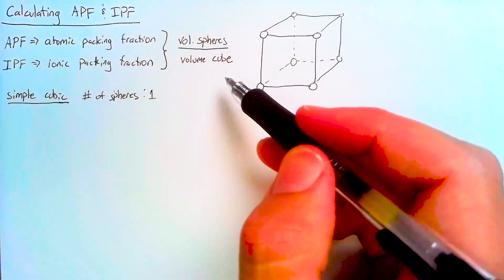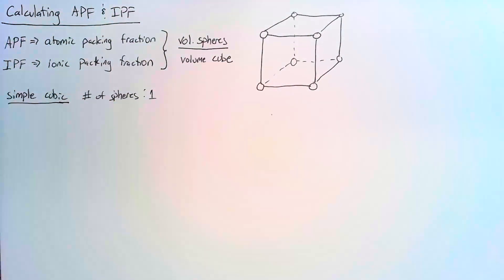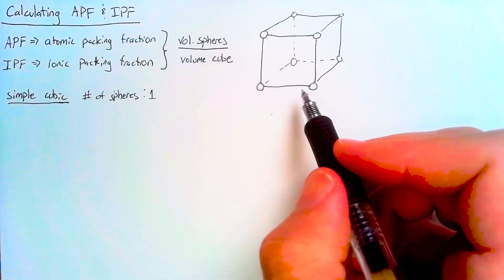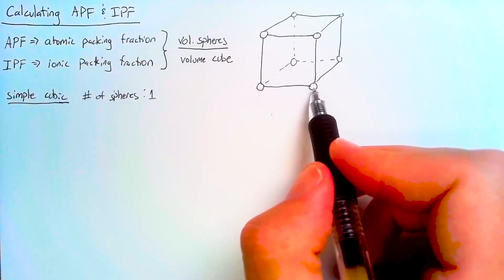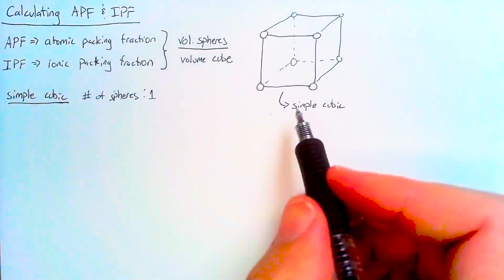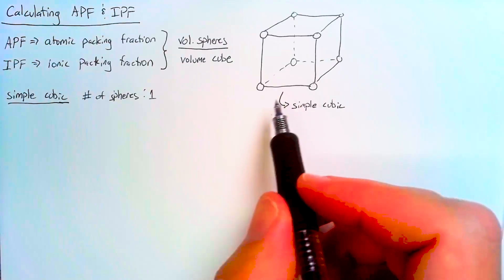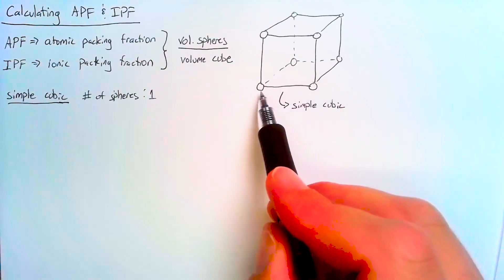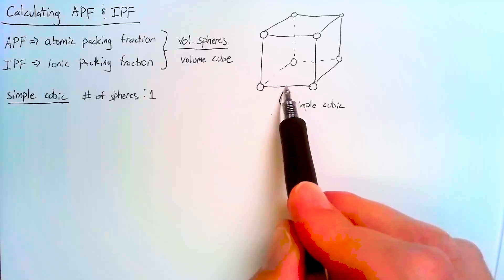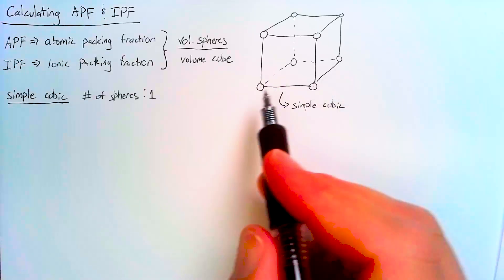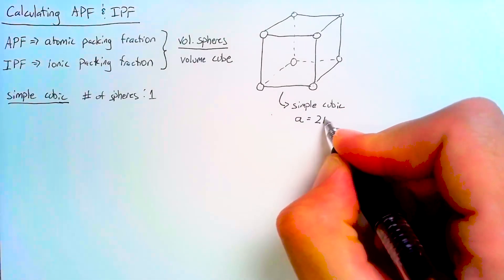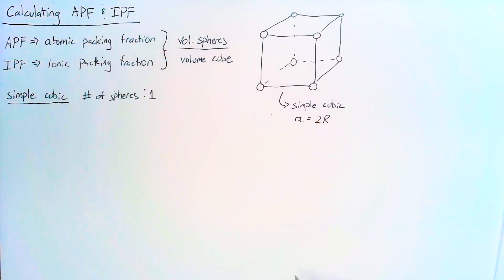We also need to ask: what is the volume of the cube? For any cubic lattice, the question is how long is one of the sides, because the volume is just that side cubed. For the simple cubic case, if we are packing as tightly as we can, the two spheres are going to be touching, giving us one radius from each center to the edge. So the side length A is just going to be two times the radius of our atom.